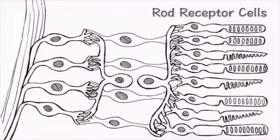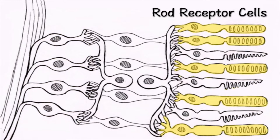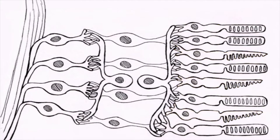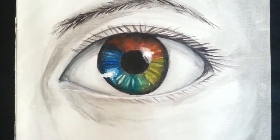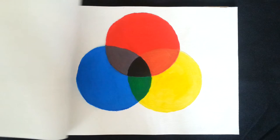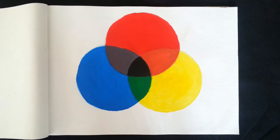The rod cells are very sensitive and help us see in dim light but no color. The cone cells allow us to see in very bright settings and differentiate colors from each other. Surely there isn't a special cone cell for every color out there — that would just be too much. Instead, there are three classes of cones in the human eye.